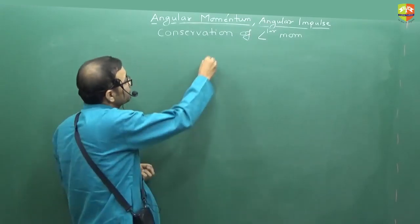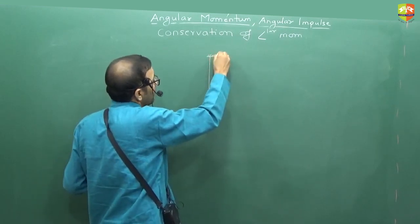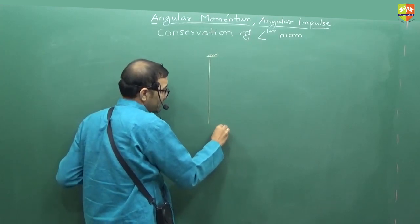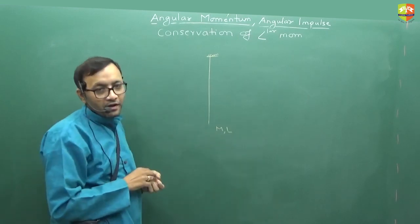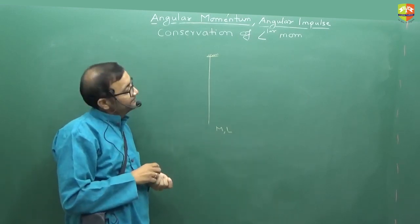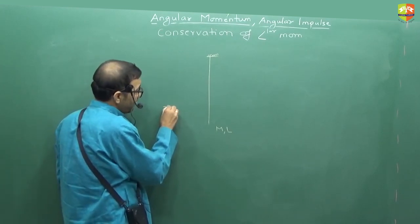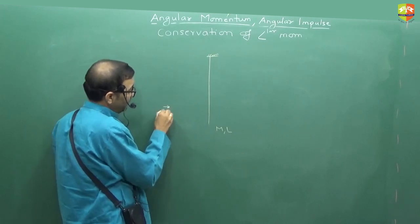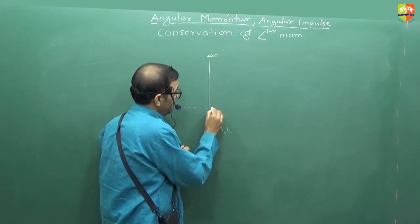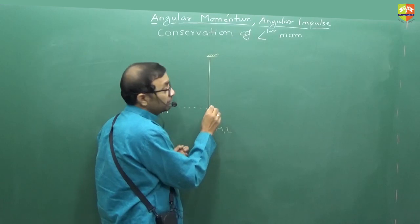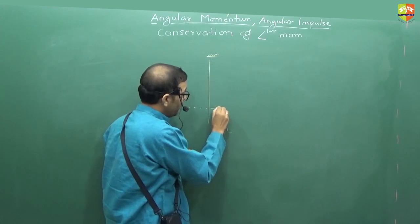Next question: it's a rod of mass M and length L. There is a bullet that comes from here, a bullet of small m comes from this side, it hits this rod, comes out from the other side.